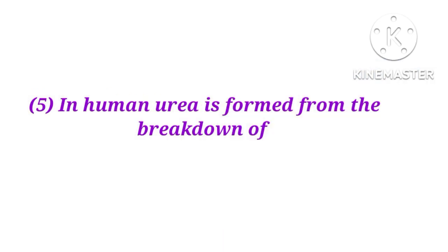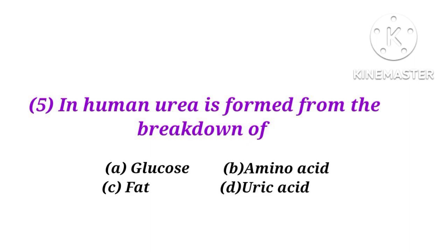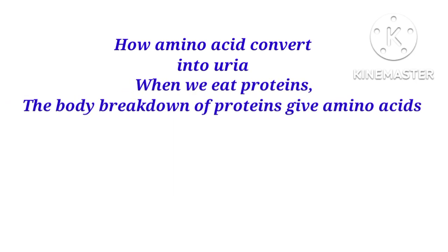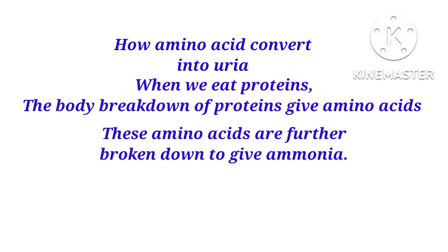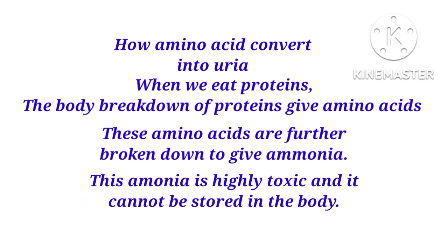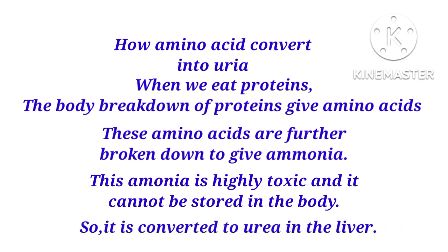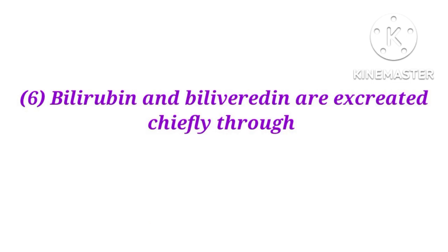Number 5. In humans, urea is formed from the breakdown of glucose, amino acid, fat, or uric acid? The answer is B — amino acid. When we eat proteins, the body breaks down proteins into amino acids. These amino acids are further broken down to give ammonia. Ammonia is highly toxic and cannot be stored in the body, so it is converted to urea in the liver.